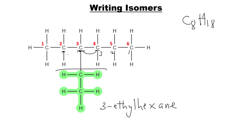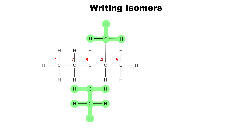The last possible isomer has two ethyl groups on the chain. The red numbering from left to right gives positions three and four, which are too large, so we number from right to left giving positions two and three — making the correct name 2-ethyl-3-... pentane. We apply the lower-number rule to determine the correct IUPAC name.